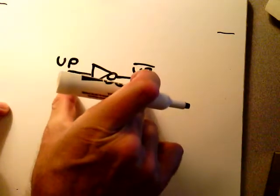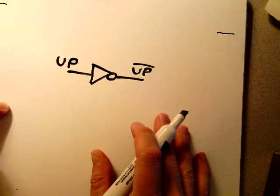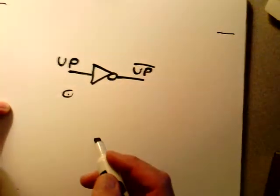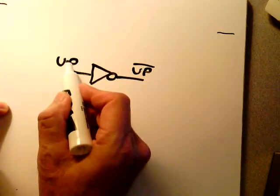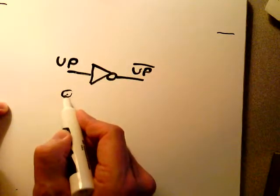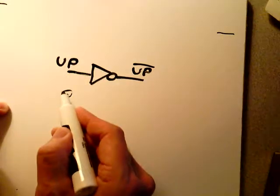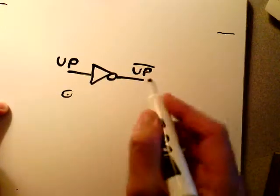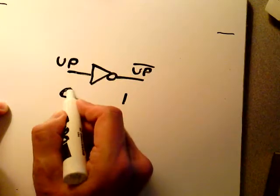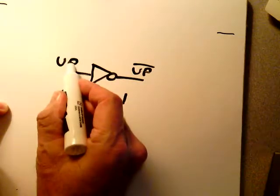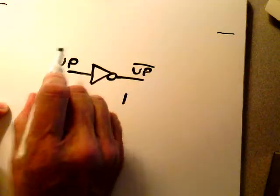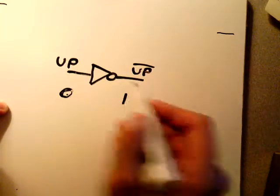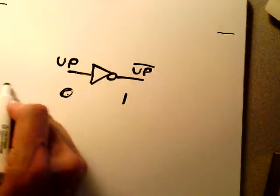If this is a zero, this is a one. Whatever story it tells on the input side, it should tell the same story on the output side. This is a high active signature — the line is zero, so you're not going up. This is a low active signature — when this line is low, you're going up, but it's not low, it's high, so you're not going up here either. This is called the inactive state.